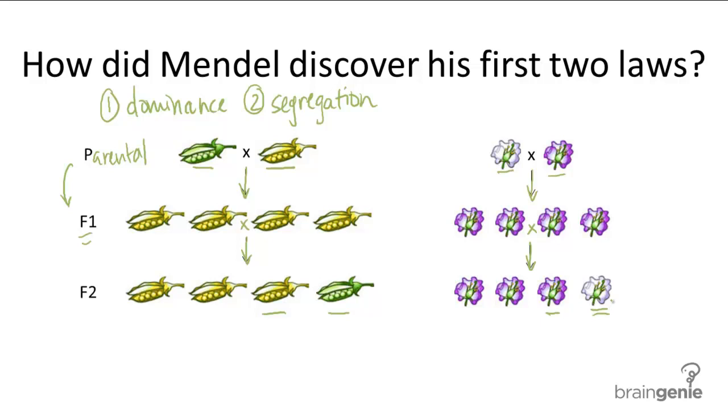So through more careful experiments, Mendel had enough evidence to conclude the first two laws of inheritance, the law of dominance and segregation. In the law of dominance, Mendel observed that there are dominant traits that can cover up other traits known as recessive traits. So dominant traits versus recessive traits.